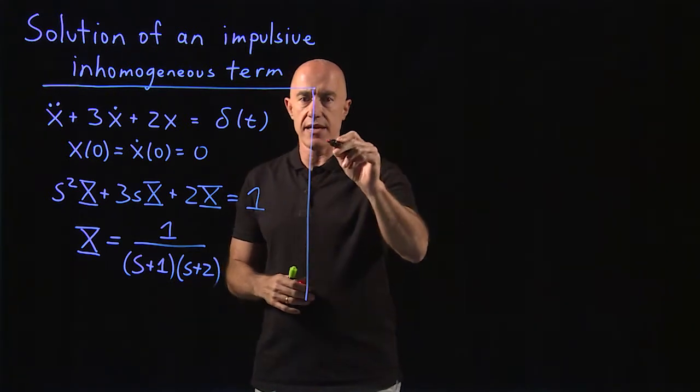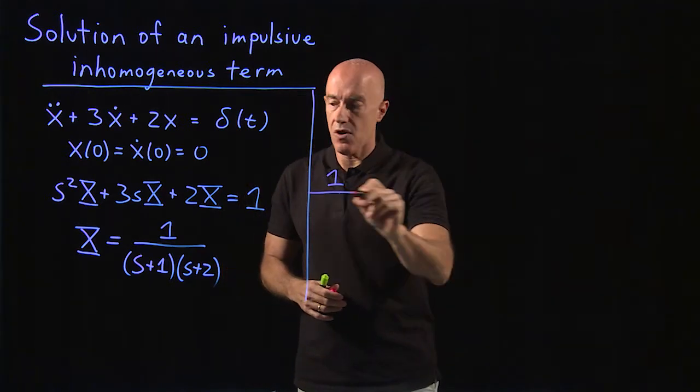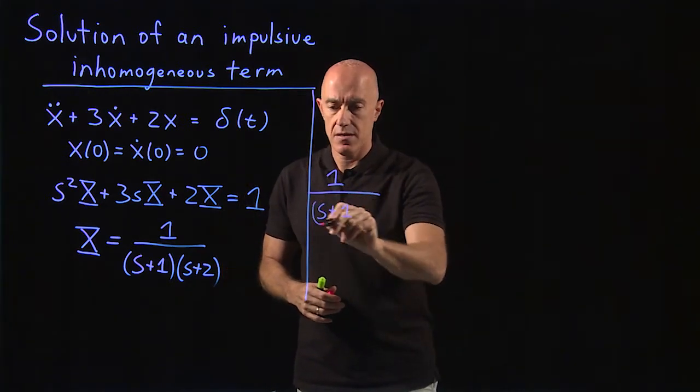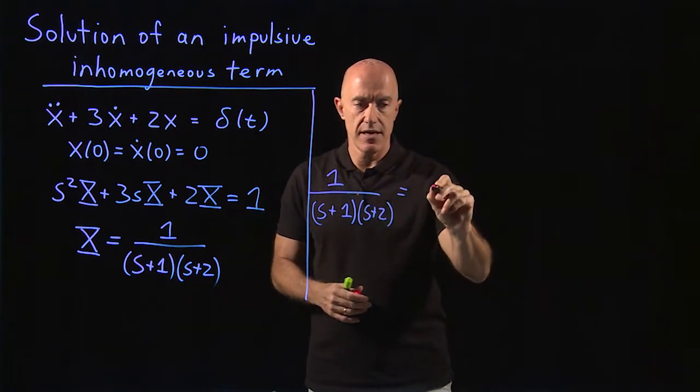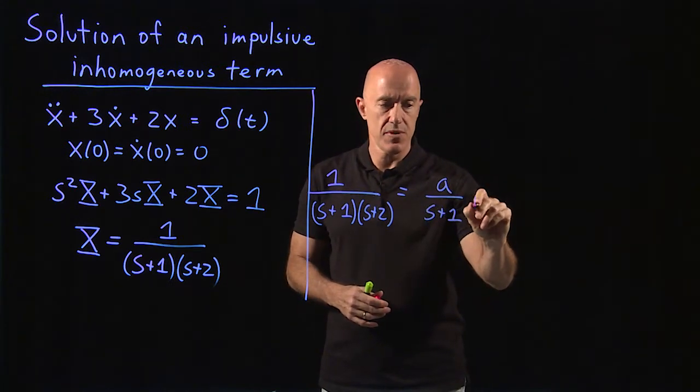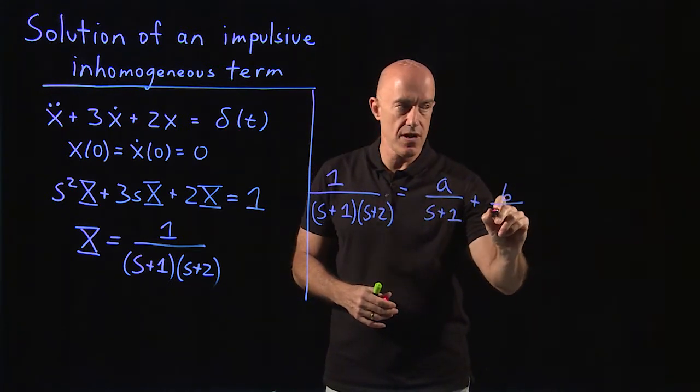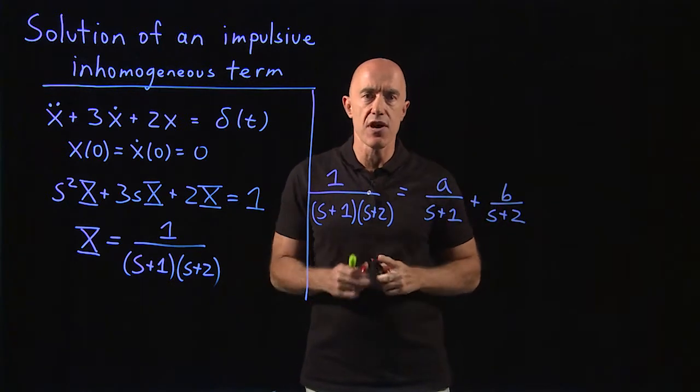So we can write 1 over s plus 1 times s plus 2 equals a over s plus 1 plus b over s plus 2. We can use the cover-up method again.